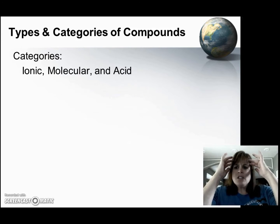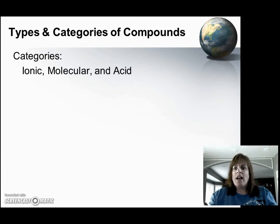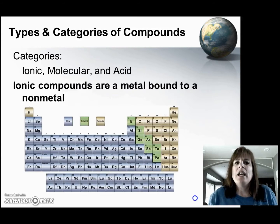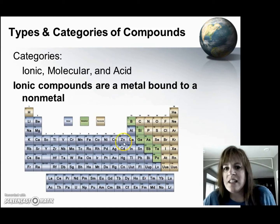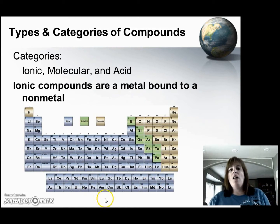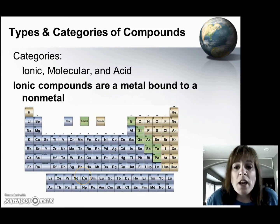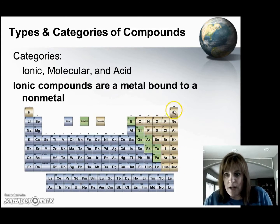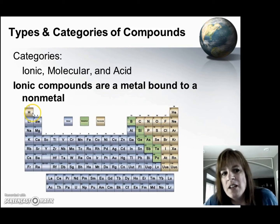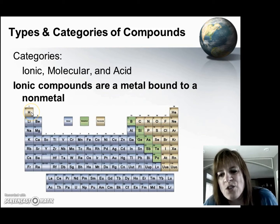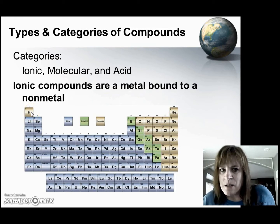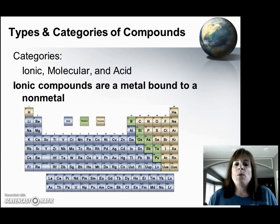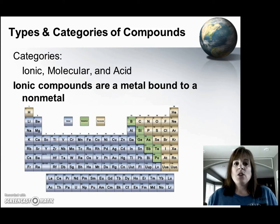I should first start by saying what an ionic compound is. An ionic compound is when I have a metal — which on the periodic table are the guys on the left, all these blue guys — when they're bound to a non-metal, these little brown guys on the right side of the periodic table. Any time we have a metal bound to a non-metal, we follow the rules for ionic nomenclature.